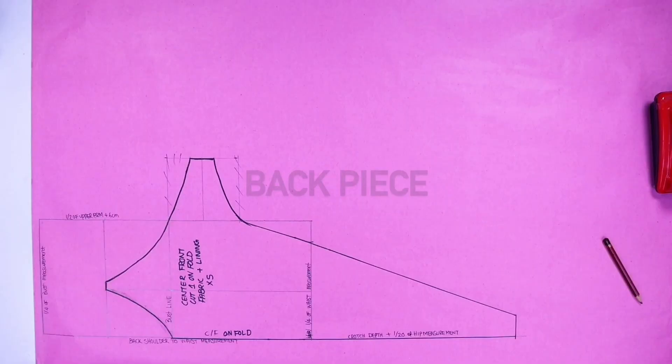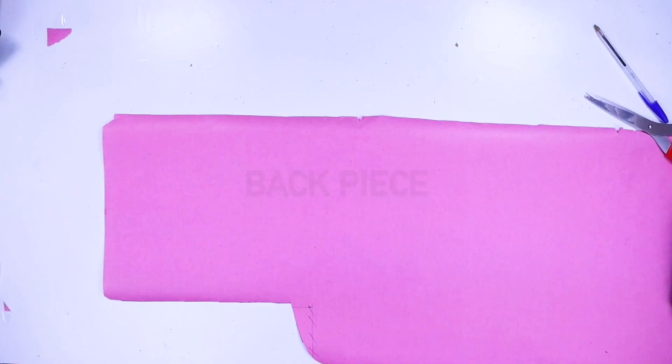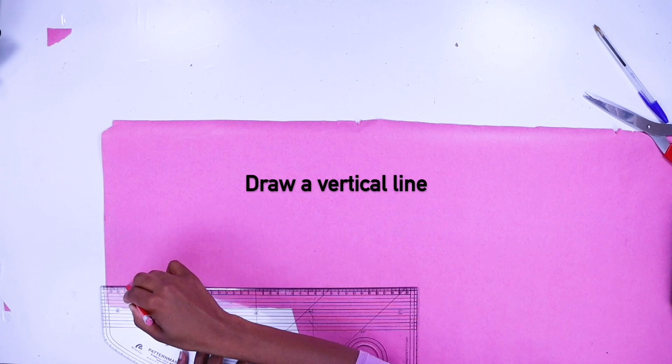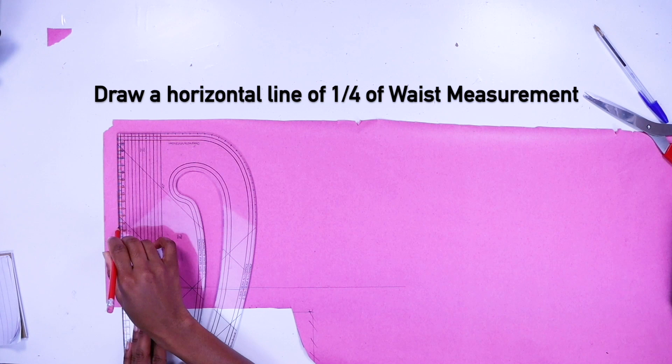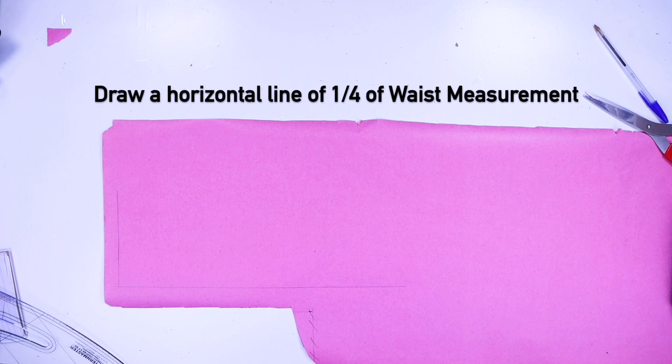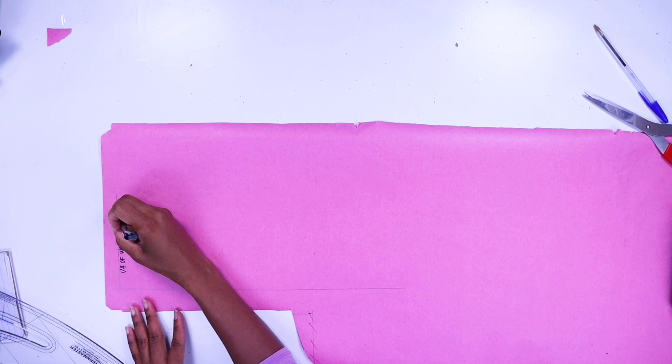Now we're going to do the back piece. Draw a vertical line. Now horizontal line, one quarter of your waist measurement. When it comes to pattern making, it's all to do with maths. You have to be like, not really great at maths, but we do a lot of maths when it comes to pattern making.